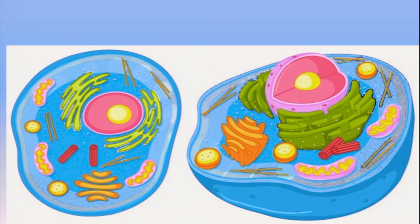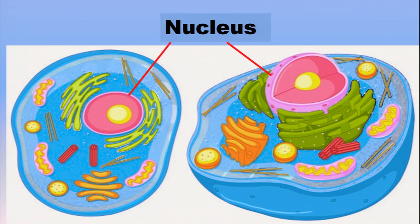Now let's learn about a very important cell component — the nucleus. You can see a prominent spherical structure present at the center of the cell. Nucleus is called the brain of the cell because it controls the activities of all other components. It is the leader among all the organelles — it manages and controls the activities of all organelles.